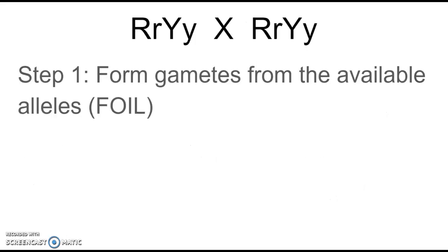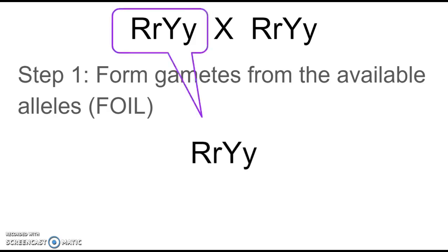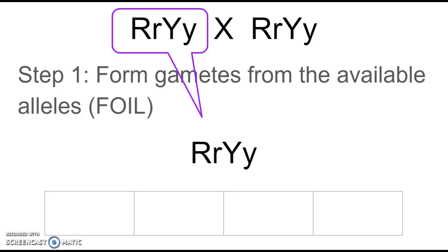The first step is to form your gametes. You pick a parent to start with, and then afterwards you'll go back and do the second parent using the same process. In this example, our parents actually look alike, so when you do one you're actually making the gametes for both. There are four different letters here, so you're going to end up with four different gametes, each having half as many letters as your parents — because that's what happens in meiosis: we divide the chromosome number in half.